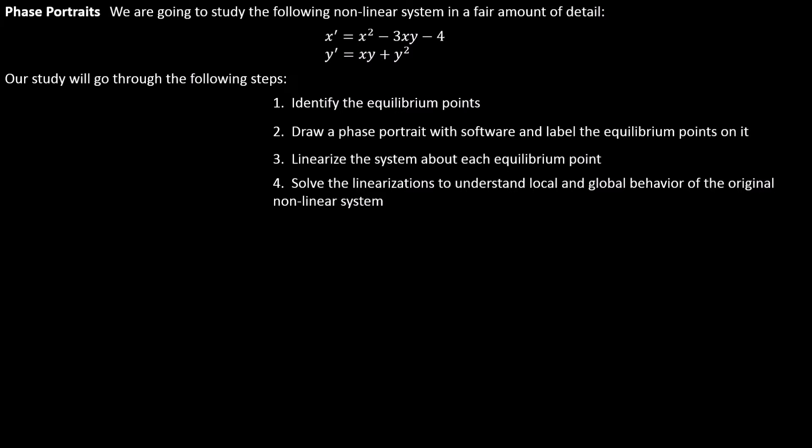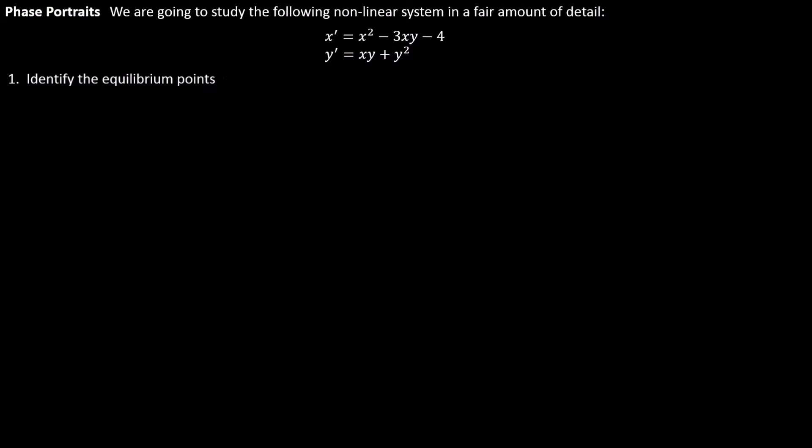And by solving the linearizations, we'll be able to make some interesting deductions about our system of equations. So let's get into that analysis now. First, we're going to identify the equilibrium points. So that just means that we need both of these equations to be zero. Because recall that in order to be an equilibrium point, x and y need to not be moving.